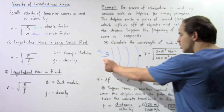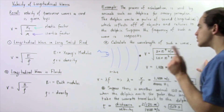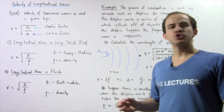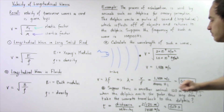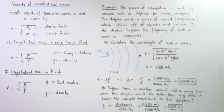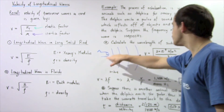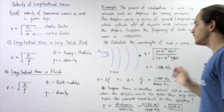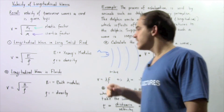The pulse must travel 120 meters there and 120 meters back, for a total distance of 240 meters. Time equals distance divided by velocity, so we take 2 × 120 meters divided by 1,400 m/s, giving approximately 0.17 seconds. So the dolphin will know after 0.17 seconds that there is a second animal that distance away.